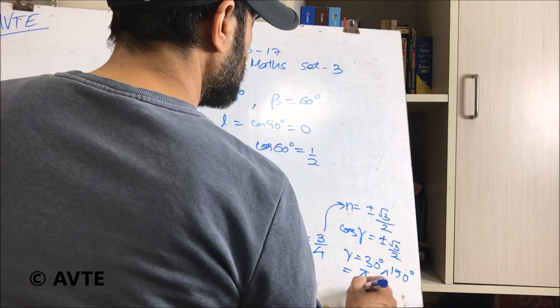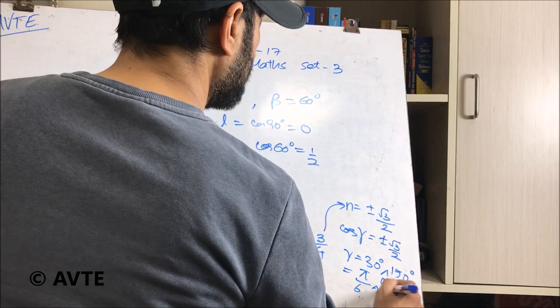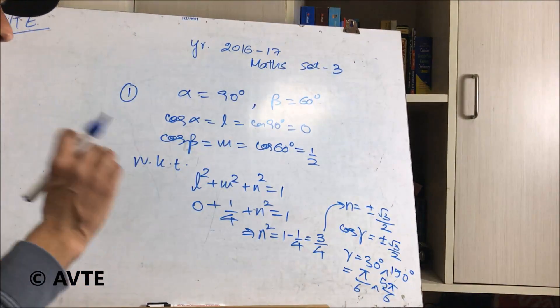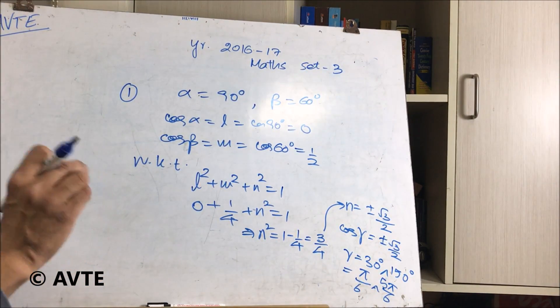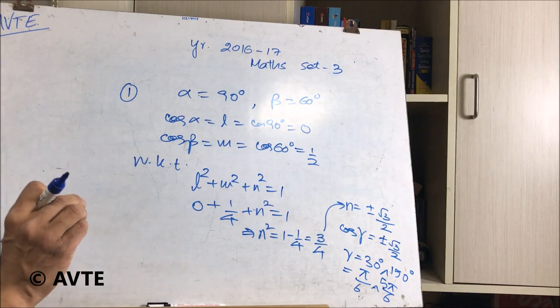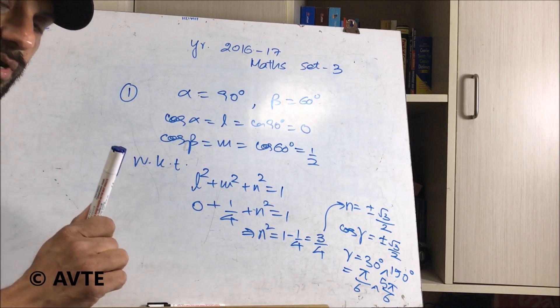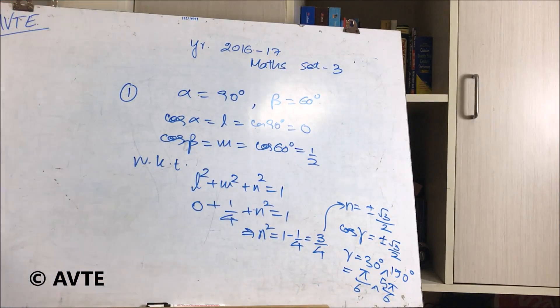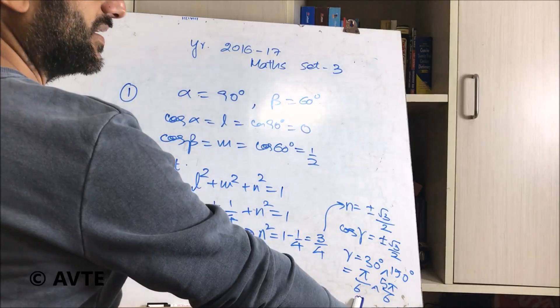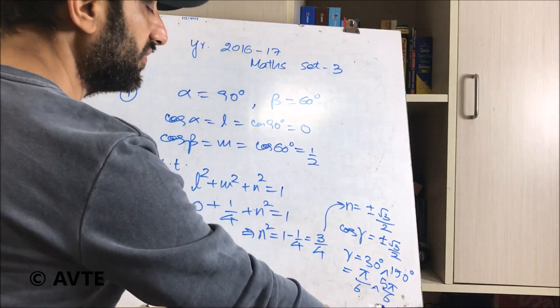That is pi by 6 and 5 pi by 6. Remember, had it been given that it is making only the acute angle with the z-axis, then it will be pi by 6. But because the only thing given to us is positive direction of the z-axis, there will be two angles possible, pi by 6 and 5 pi by 6.